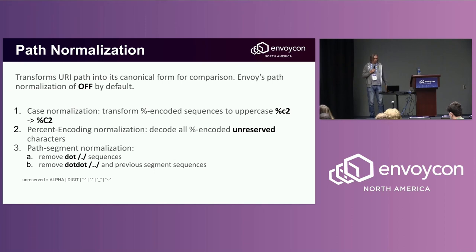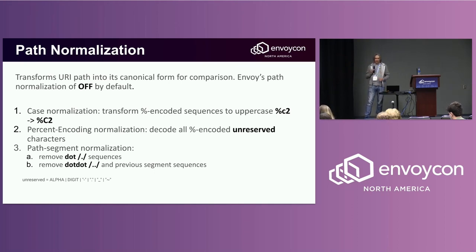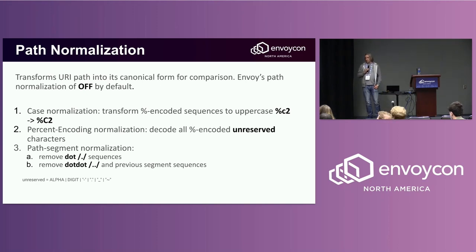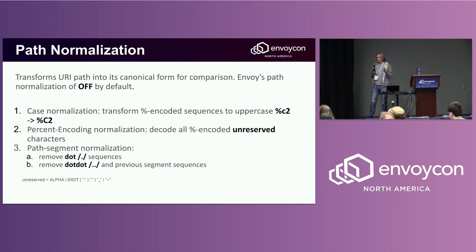If you look at it, you'll see it's a fairly small subset of characters that is unreserved. Then there is path segment normalization, where dot sequences are collapsed, and the dot-dot sequence actually collapses also the previous segment.